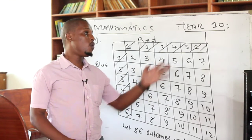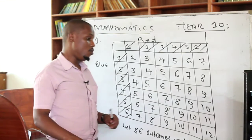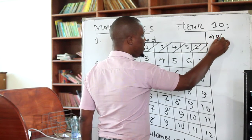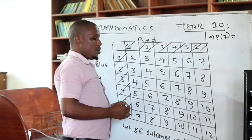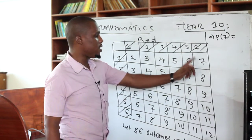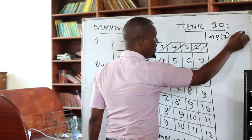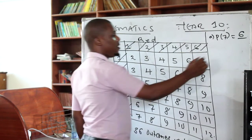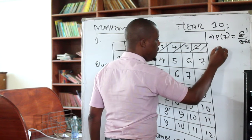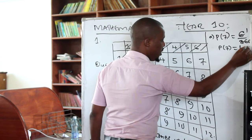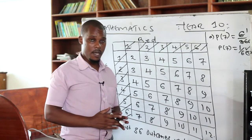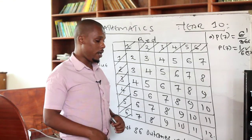With this table, you can now answer the questions clearly, focusing on what the examiner requires. Question one: we are told the sum is 7, so what is the probability of getting a sum of 7? If you look at how many 7s are there in the table: 1, 2, 3, 4, 5, 6 — there are 6 of them. So the probability is 6 over the total number of outcomes, which is 36. That gives 6 divided by 36, and when you simplify by 6, you get 1 over 6. So the probability of getting a sum of 7 is 1/6.